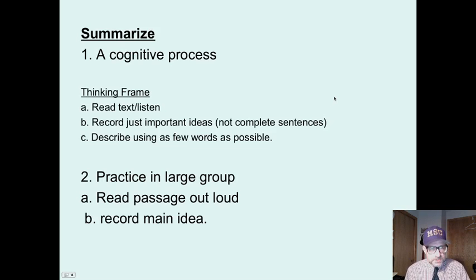Summarizing is a cognitive process. You teach it explicitly. You break it down into steps: Read the text or listen, record just the important ideas, don't use complete sentences, describe using as few words as possible. And to teach this, you would practice in large group. Boys and girls, what is important here? You'd read a passage out loud, then ask students what the main idea is and record it. Cognitive modeling.